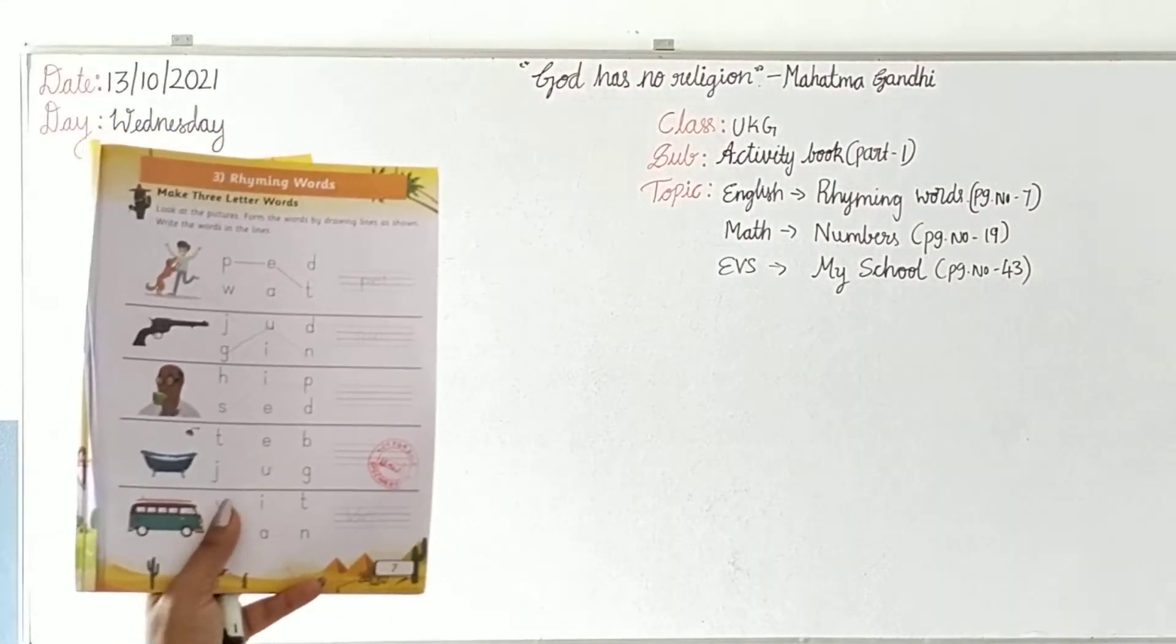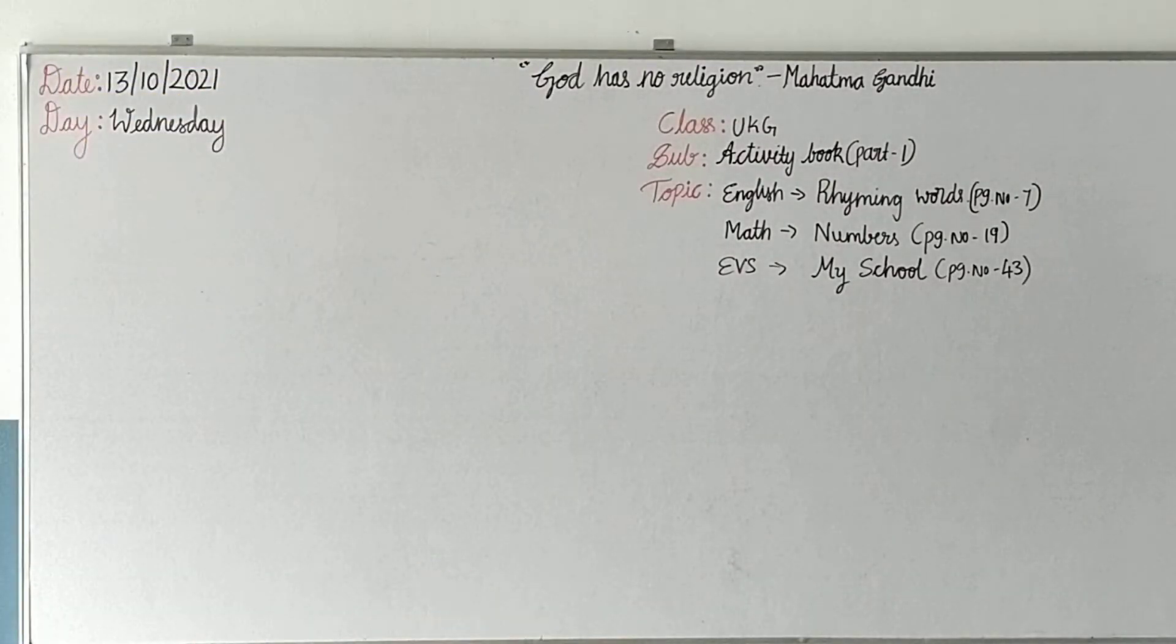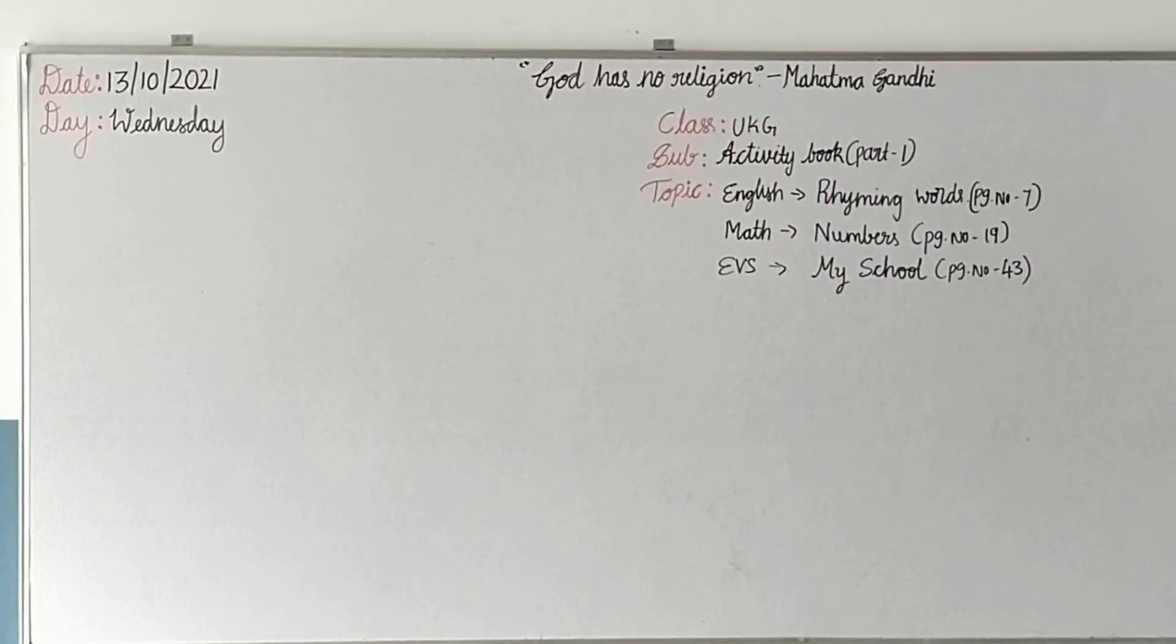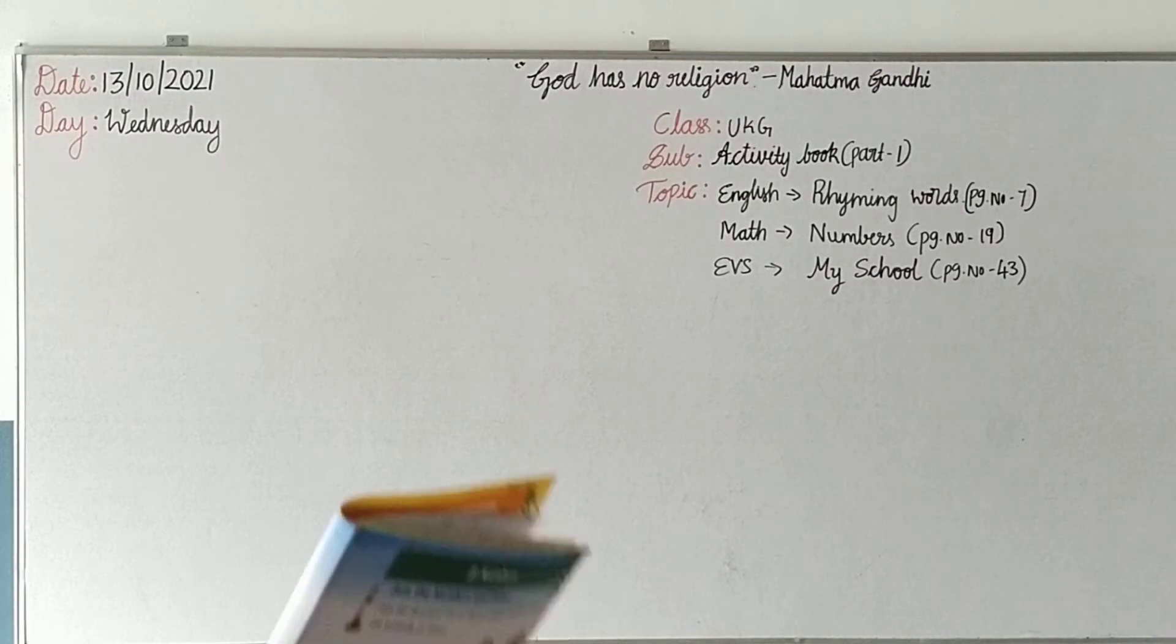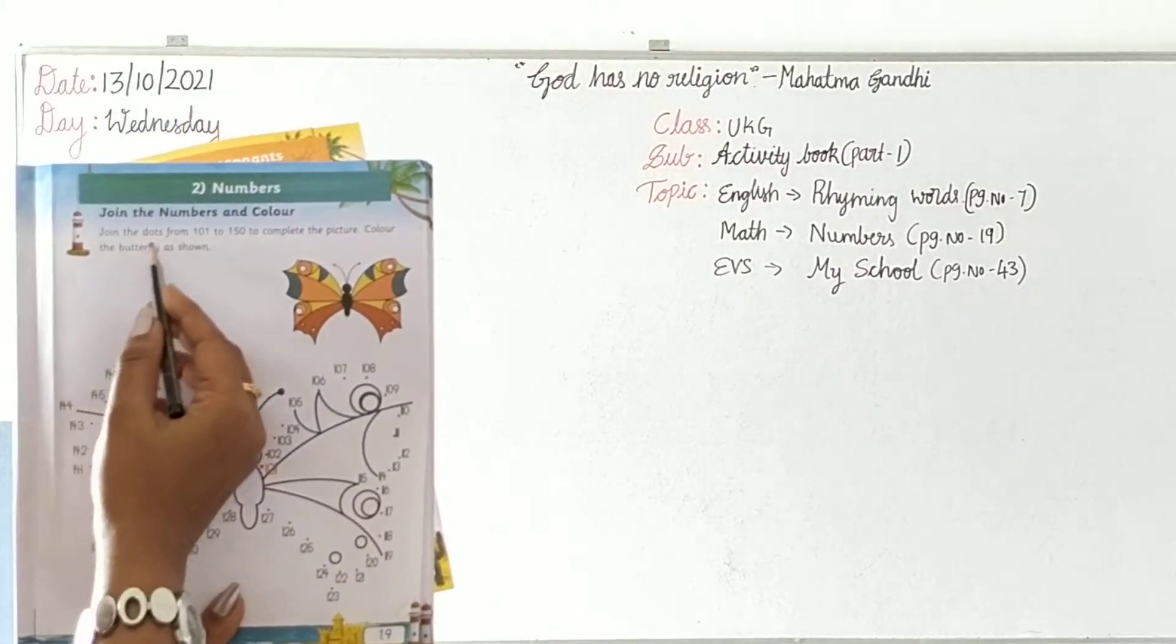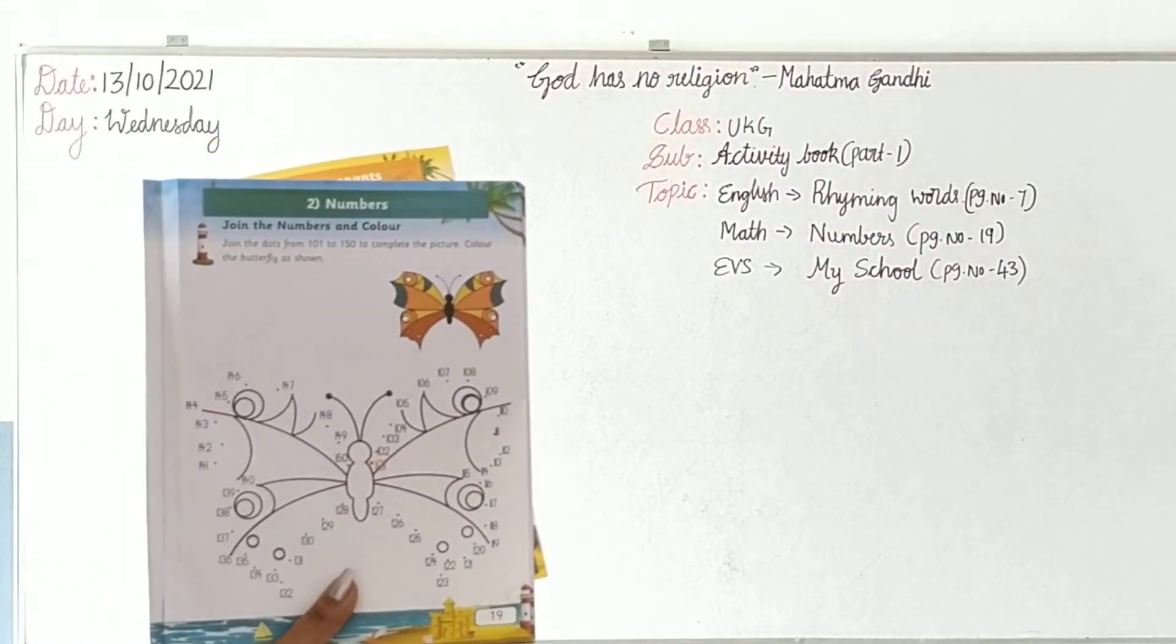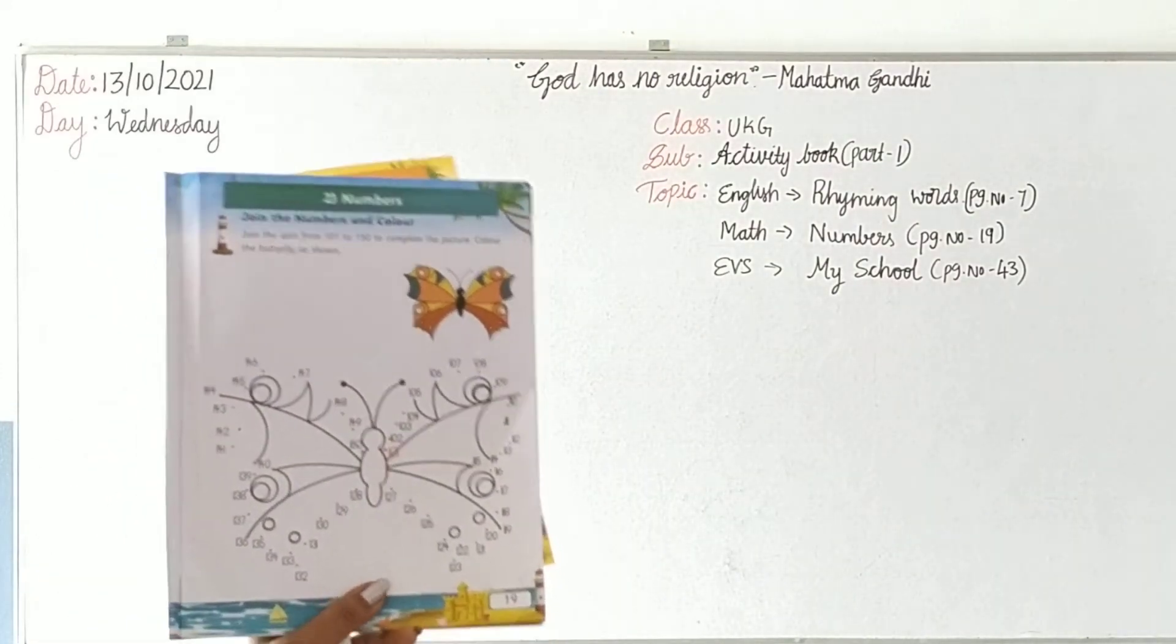Yes children, you have to look at the pictures first, find out the words, draw the lines, and write the words in the given four lines. Page number seven, please write your name, then today's date. This is your homework. Then page number nineteen, math activity.